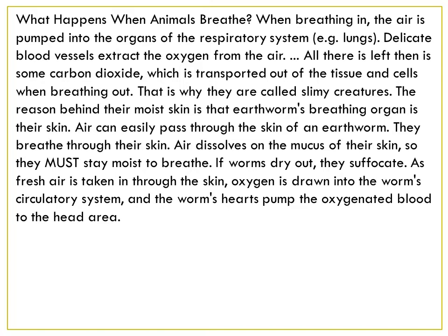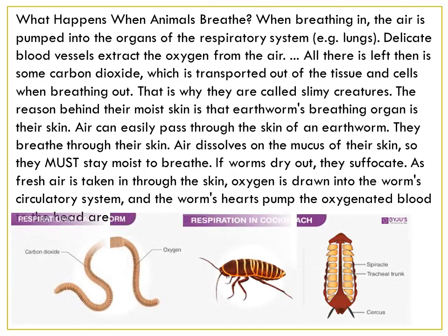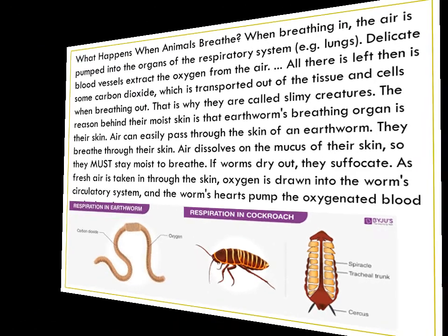Earthworms must stay moist to breathe. If worms dry out, they suffocate. As fresh air is taken in through the skin, oxygen is drawn into the worm's circulatory system, and the worm's heart pumps the oxygenated blood to the head area. As we see in the diagram, oxygen enters and carbon dioxide exits during earthworm respiration.